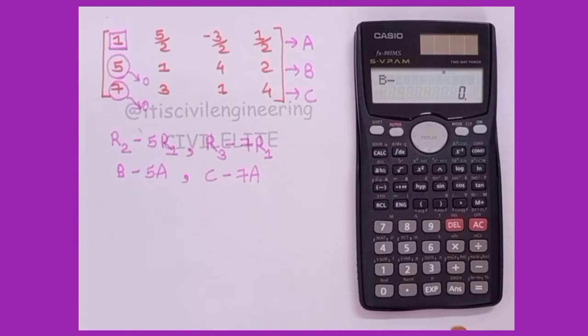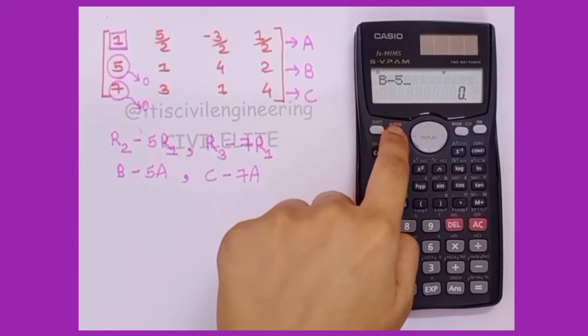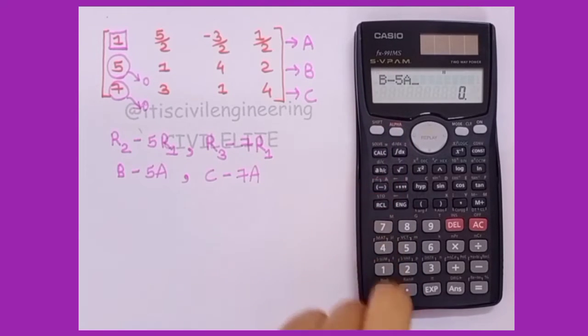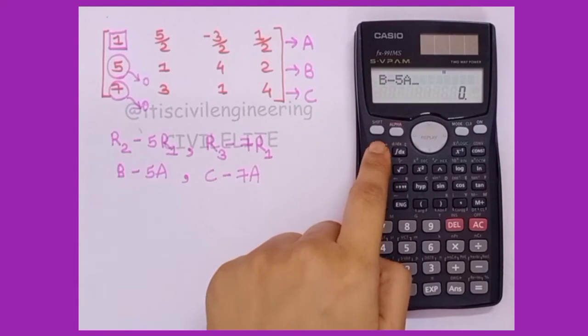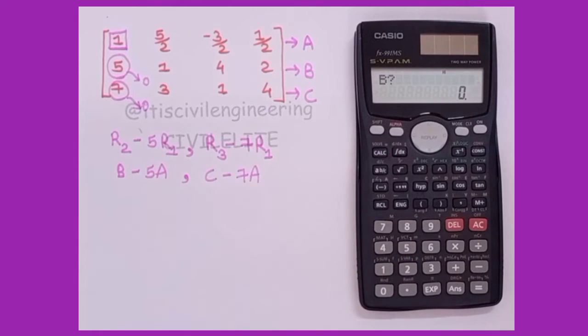Press alpha b minus 5 alpha a, then press calc. In b, the first value is 5, press equal to.